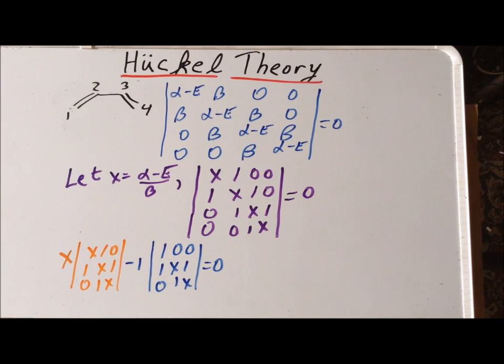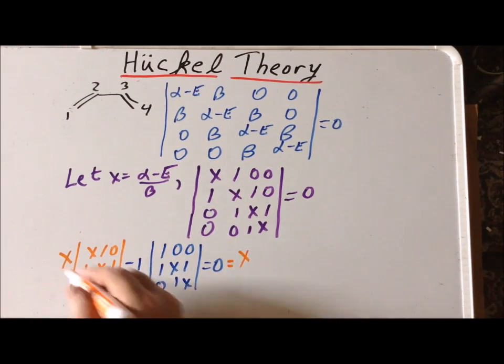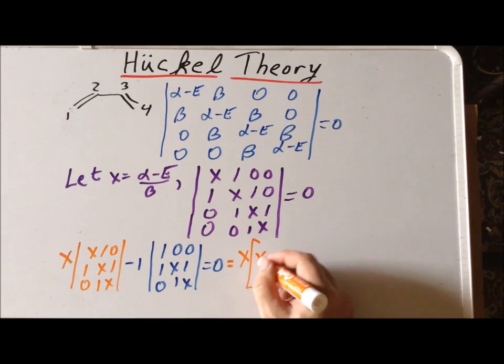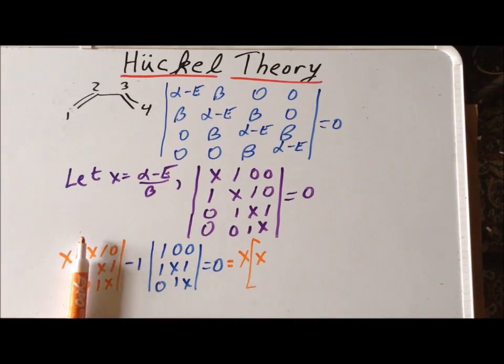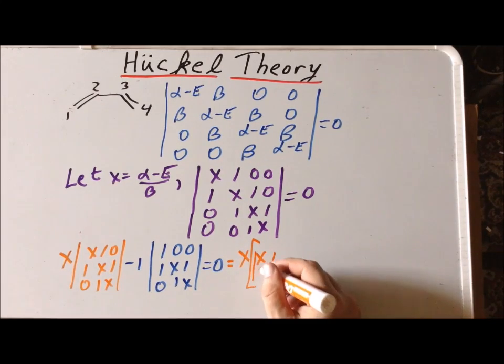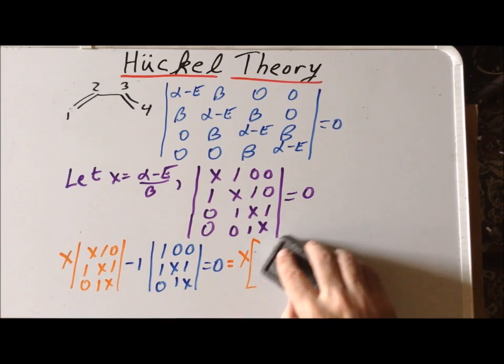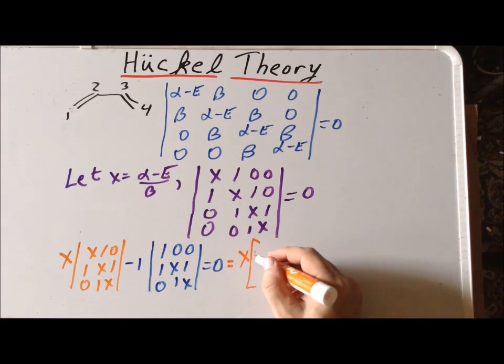Next, we still have three by three determinants, which we cannot evaluate directly. So, we have to also expand those by minors. Put our x coefficient in front. So, now the coefficient that's appropriate is this x. And it's going to multiply by the resulting determinant we get by removing the first column and the first row. So, that leaves x, 1; 1, x.